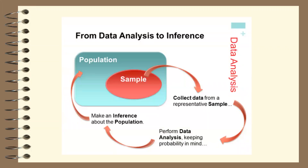Here's a visual representation of what we do in statistics. We want to know about a population, but sampling everybody is often not feasible. So we take a small, good representative sample, collect data from it, and analyze that data to make an inference about the population. If you take a good enough sample, you should be able to make an inference about the population.